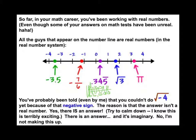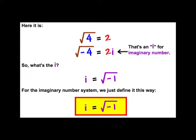You've probably been told, yes, even by me, that you can't find the square root of negative 4. Well, I don't think I've ever told you that. Probably what I've said is that you can't find it with real numbers because of that negative sign inside the radical sign because you can't multiply a number times itself and get a negative. But there is an answer. Try to calm down. I know this is terribly exciting. It's an imaginary answer, and no, I am not making this up.